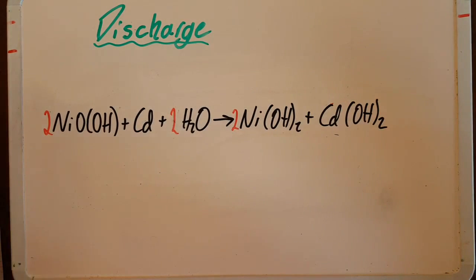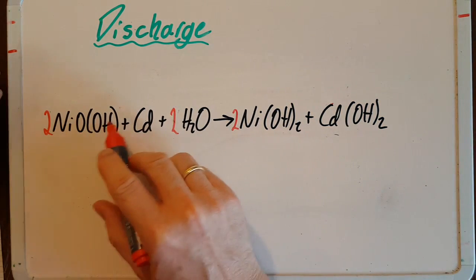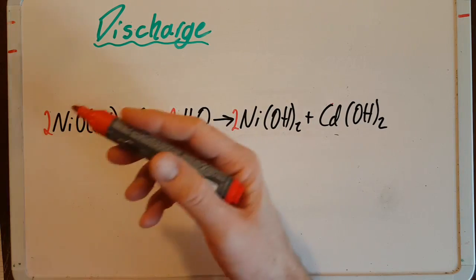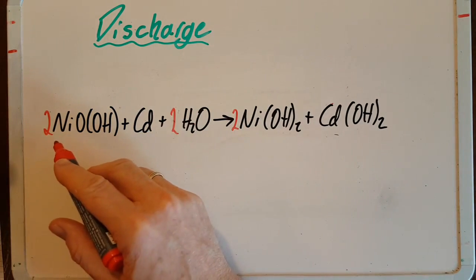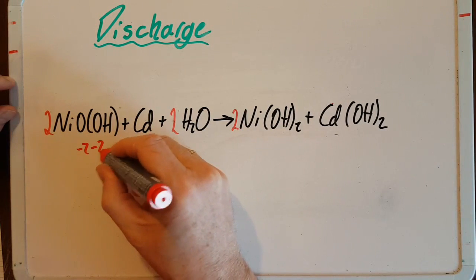All right, so let's try and name these chemicals. This is nickel oxide hydroxide. Well, you have to give me an oxidation state to work out which nickel oxide hydroxide it is. So let's put in the oxidation states here.